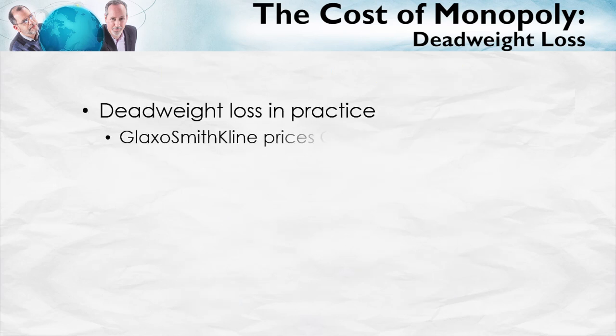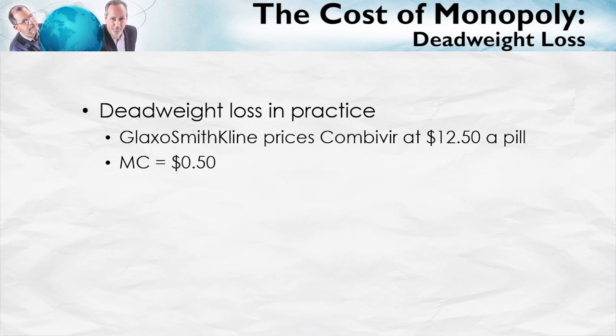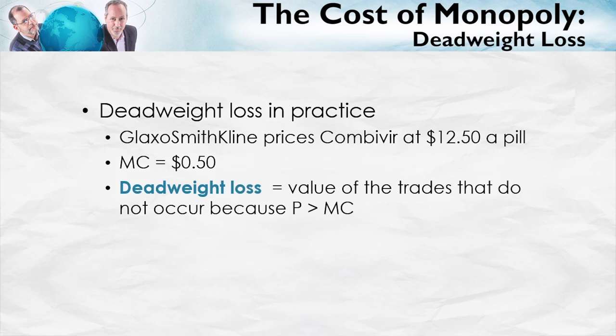Let's remind ourselves what deadweight loss looks like in practice. GSK prices Combivir at $12.50 per pill; the marginal cost is $0.50. The deadweight loss is the value of the trades that do not occur because price is greater than marginal cost. Some people would be willing and able to pay $10 per pill, or $4, or even $1 per pill, and those prices would more than cover the cost of producing those pills.